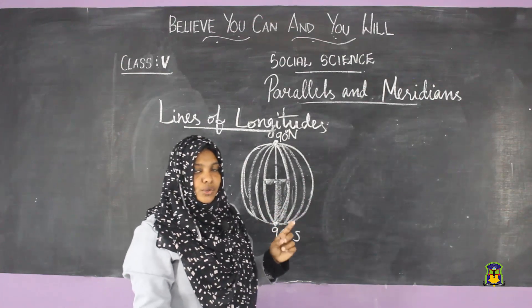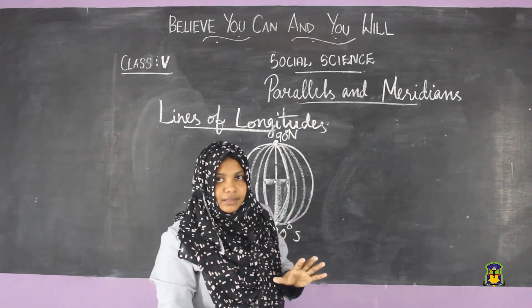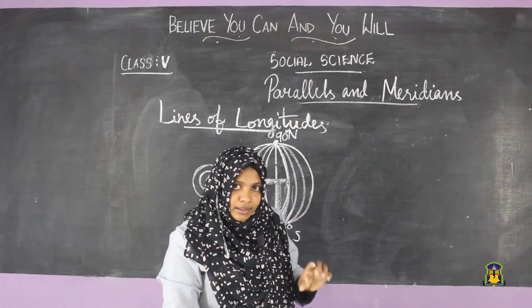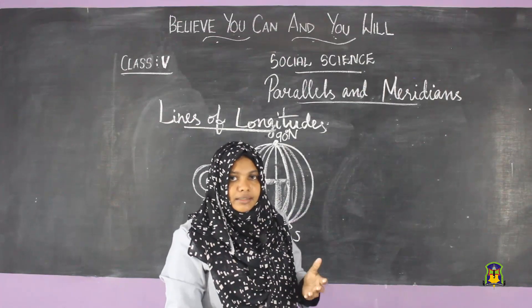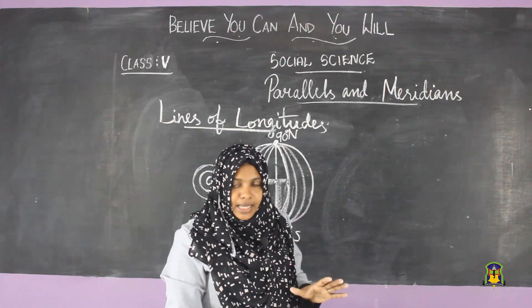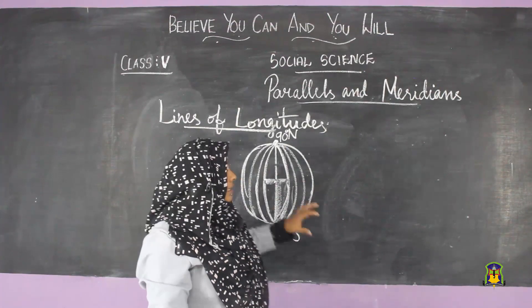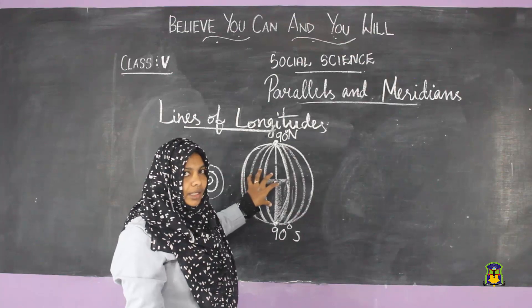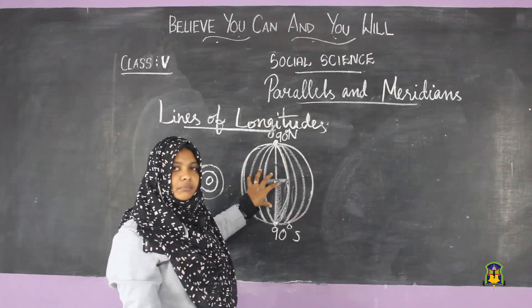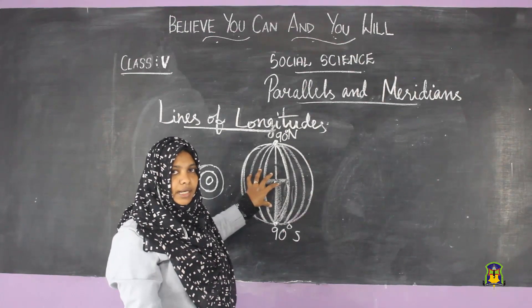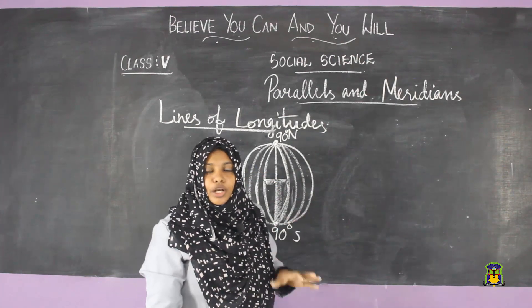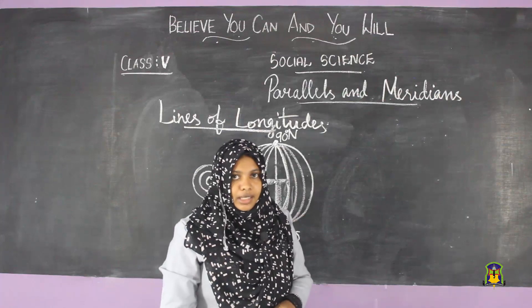To summarize the comparison: latitudes are not all the same length, but longitudes are the same length. Latitude lines are at equal distances from each other, but longitudinal lines are not at equal distances.